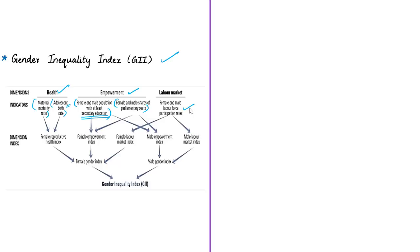The GII is based on the same framework as the IHDI and tries to expose differences in the distribution of achievements between women and men. It measures the human development costs of gender inequality — a higher GII value indicates more disparities between females and males and greater loss to human development.